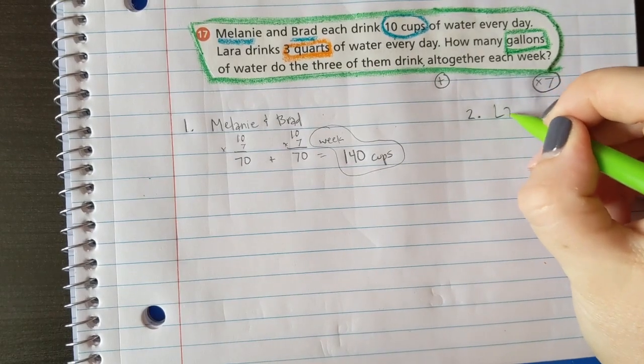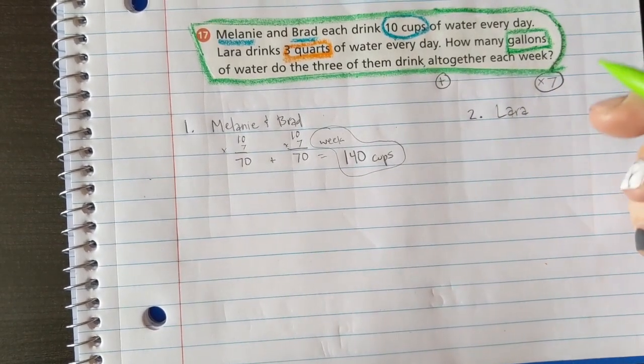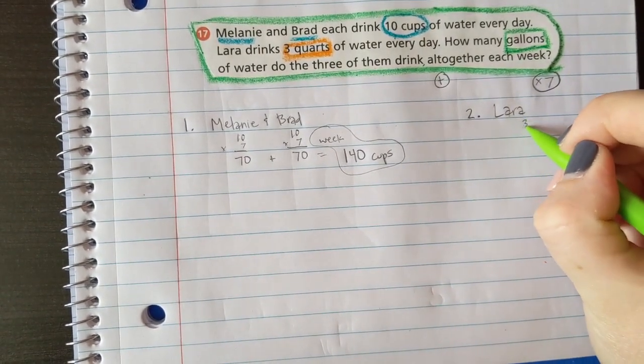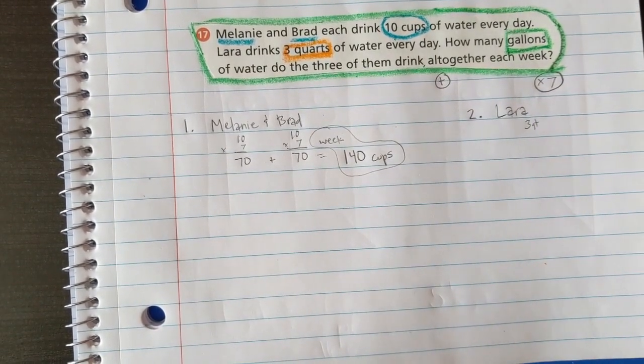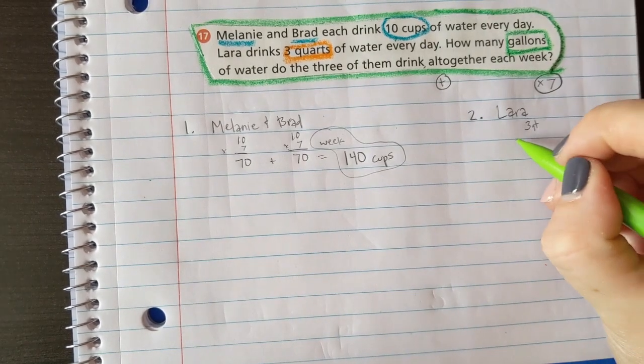Step two: I would find Laura. Laura is three quarts of water, let's make sure that we know it's QT. Three quarts every day, so how many does she do in a week?